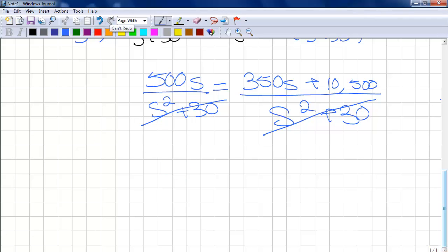In order to solve the equation, we must have common degrees on the same side. So, we subtract 350S from both sides and are left with 150S is equal to 10,500.